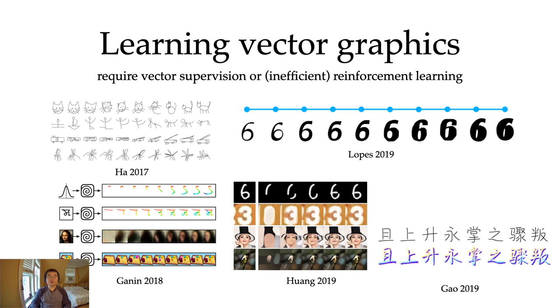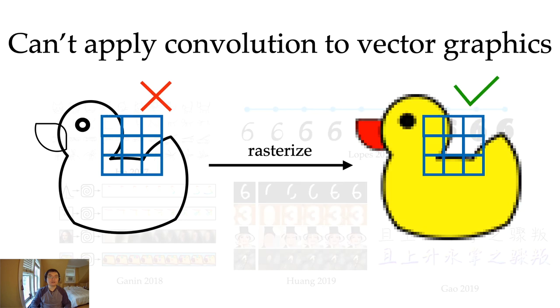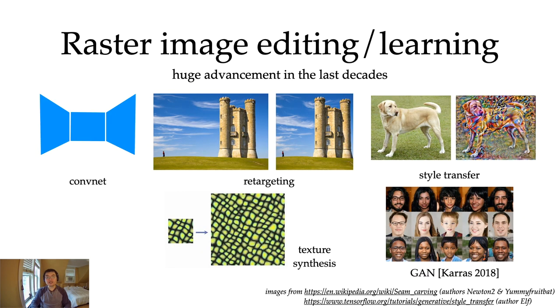More recently, there are works on machine learning where people want to teach machines to draw vector graphics. This is a hot direction, but so far most methods either require vector supervision or brute force reinforcement learning. One problem is that we can't apply powerful convolutional neural networks to vector graphics because they lack the structure of raster images.